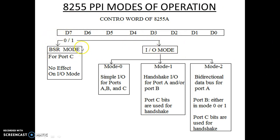The selection of BSR mode and IO Mode is done using bit 7. If bit 7 is 0, then BSR mode is used. BSR means Bit Set Reset, in which all Port C lines are used as individual input-output lines.